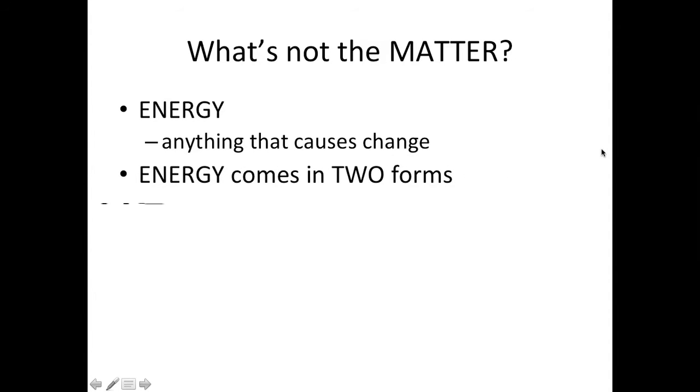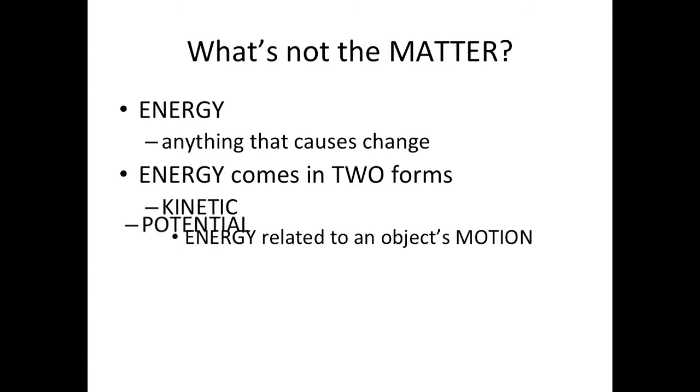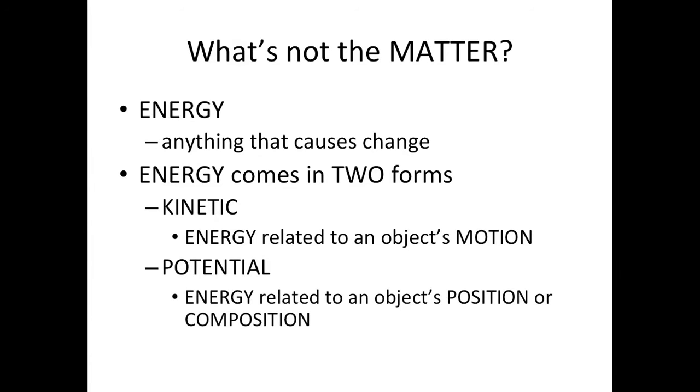Energy comes in two forms: kinetic and potential. Kinetic is energy that's related to an object's motion, where potential is related to the object's position or composition—what it's made up of. But for this class, we're not really going to focus on these two. We're going to simplify it a bit.